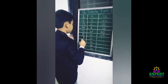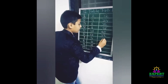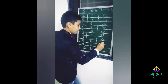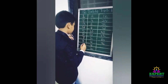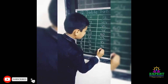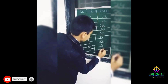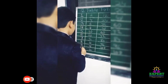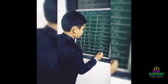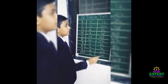Seven plus one is eight, so eighty-four. Eight plus one is nine, so ninety-six. Nine plus one is ten, so one hundred and eight. Ten plus two is twelve, so one hundred and twenty.